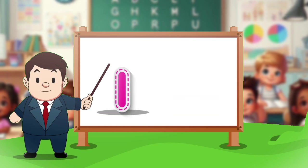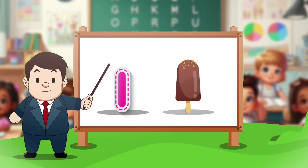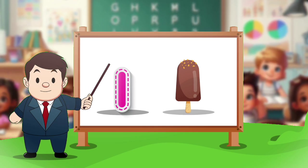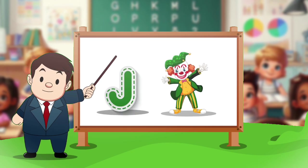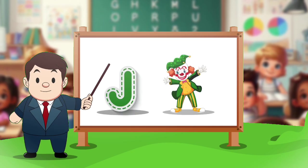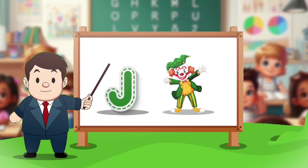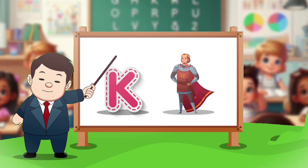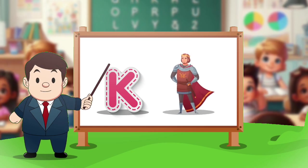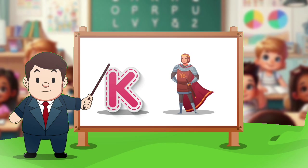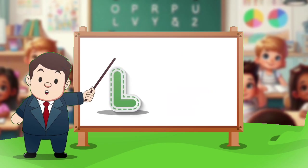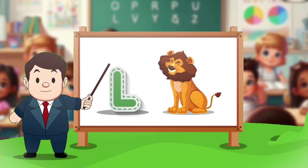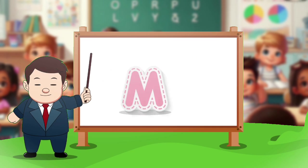I. I for ice cream. J. J for joker. K. K for king. L. L for lion.